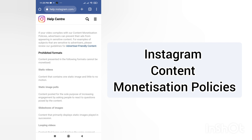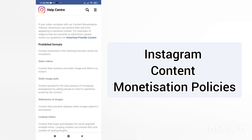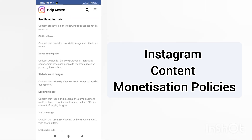The first prohibited format is static video — content that contains one static image with little or no motion will not be monetized. Similarly, static image polls — content posted solely to increase engagement by asking people to react to questions — will also not be monetized.